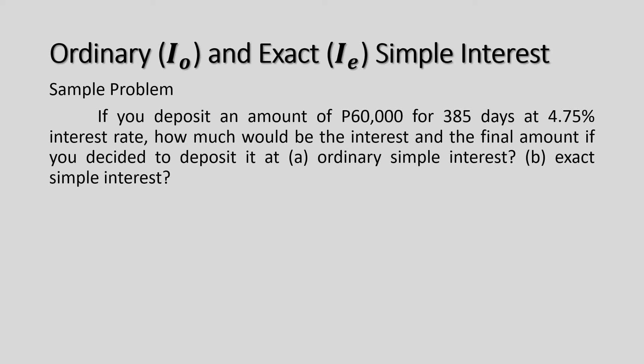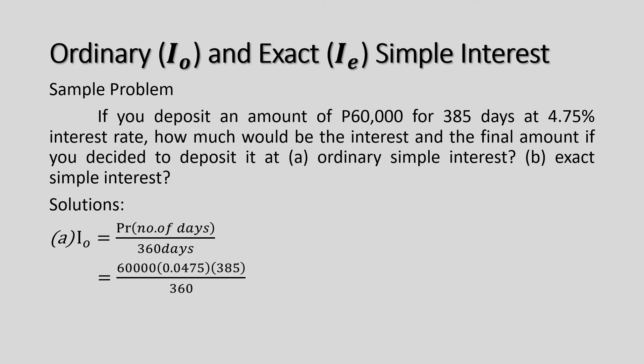Let us solve for the interest using ordinary simple interest. For I_O, the formula is P times R times the number of days divided by 360. Our principal is P60,000, the interest rate 4.75% equals 0.0475, and the number of days is 385. Substituting the values: 60,000 times 0.0475 times 385 divided by 360, which gives us I_O equals P3,047.92.